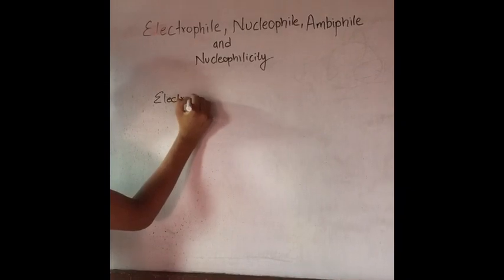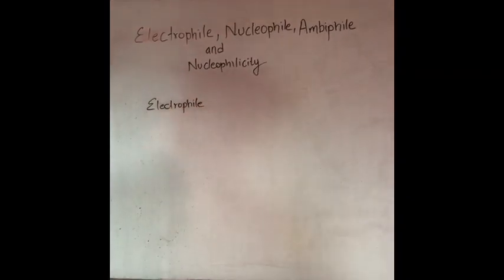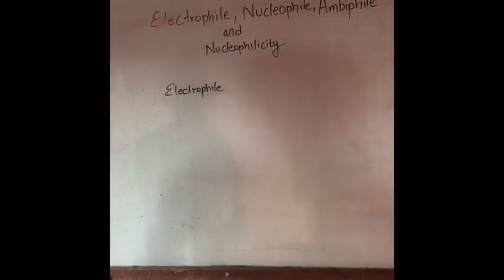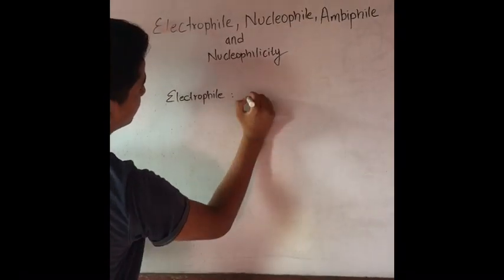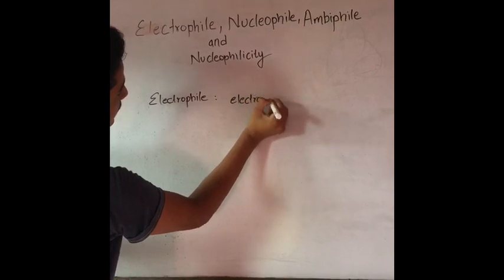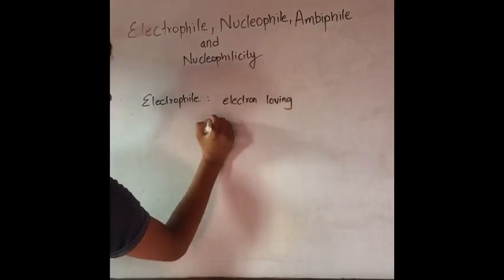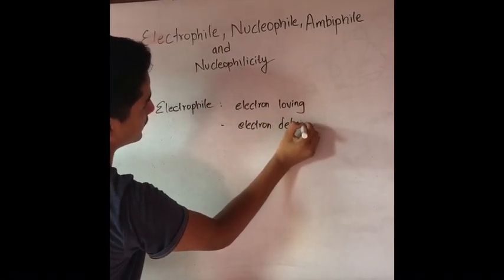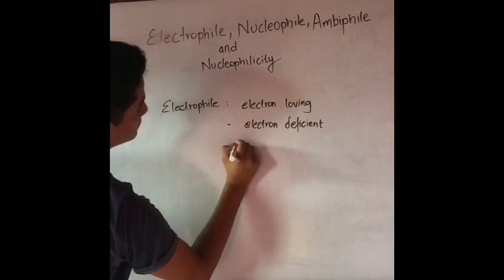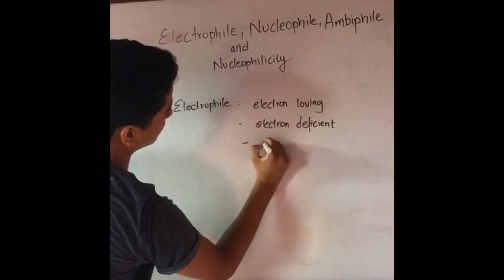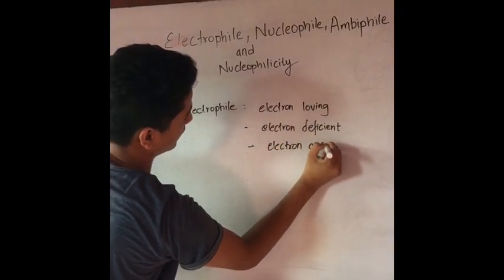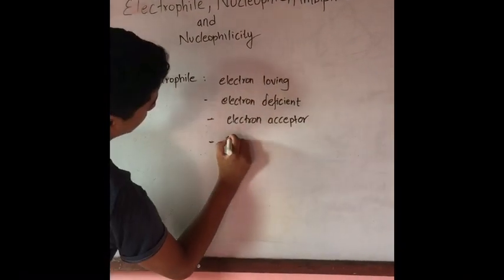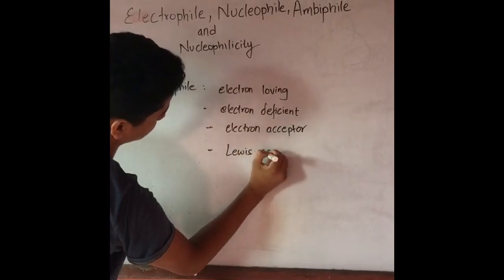What is electrophile? Electrophile. This is a chemical reaction — to take electron from an electron-donating substance. Electrophile means electron-loving. It is electron-deficient. Electrophile is a Lewis acid.